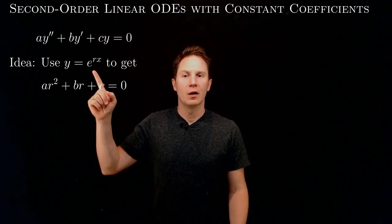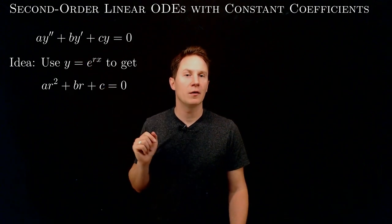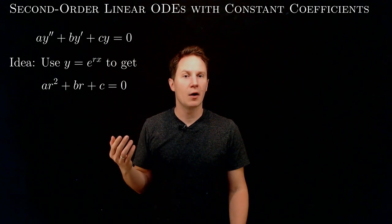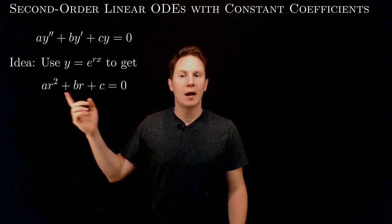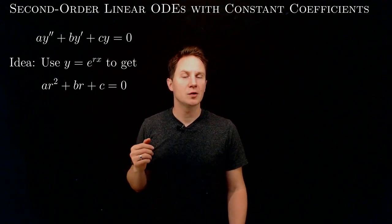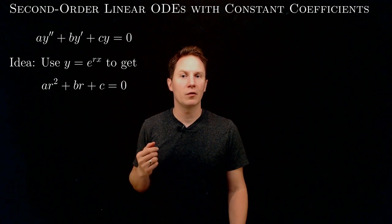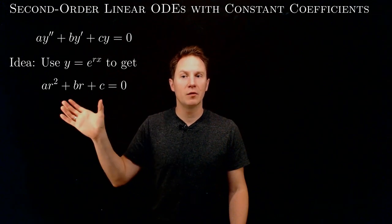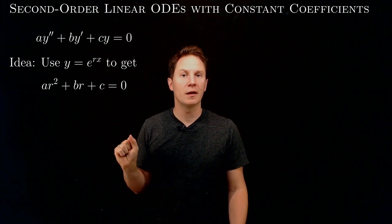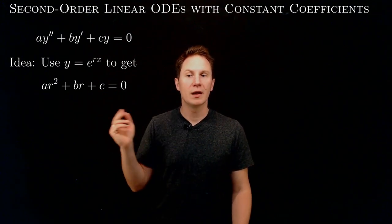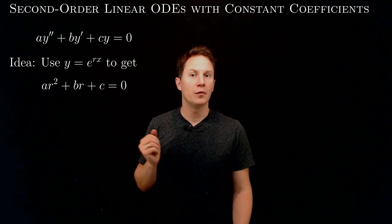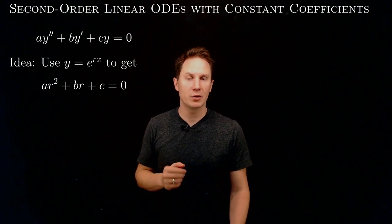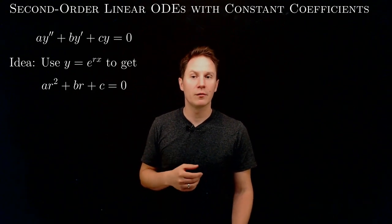Plugging this guess solution into the left-hand side of the ODE, we get e to the rx multiplied by a times r squared plus b times r plus c. Now because e to the rx is never zero, it must be this quadratic that is zero. Therefore we can find the value of the coefficient r by solving this quadratic equation using the quadratic formula.